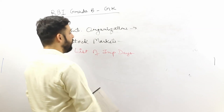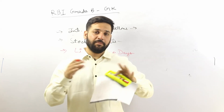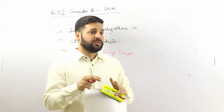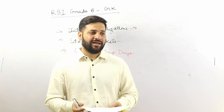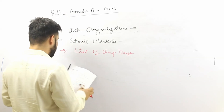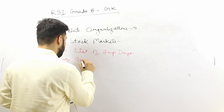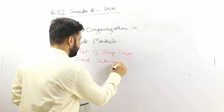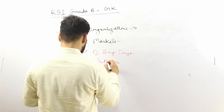Then there is the list of important days — I will provide a link for that. Basically I will provide two digests: one for banking and one for static GK, and if possible a complete last-six-months current affairs digest. Next, very important, is the list of latest government schemes.